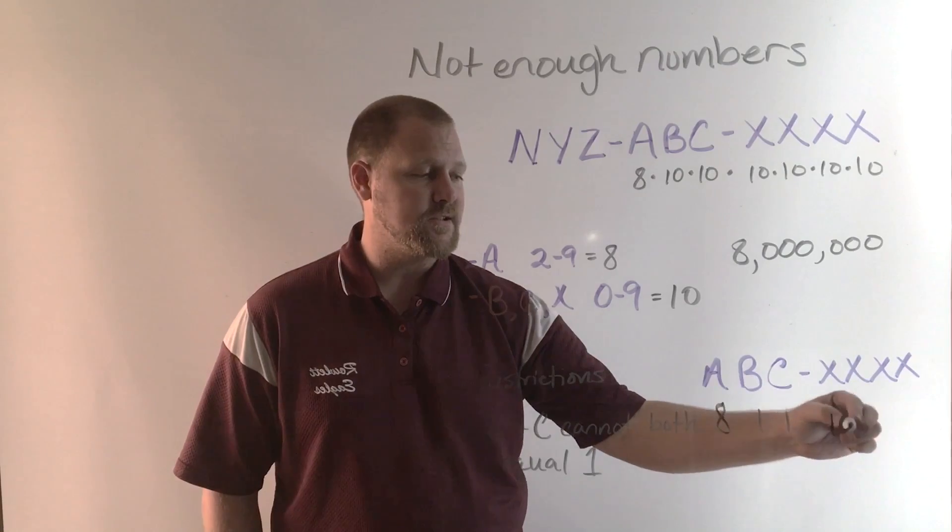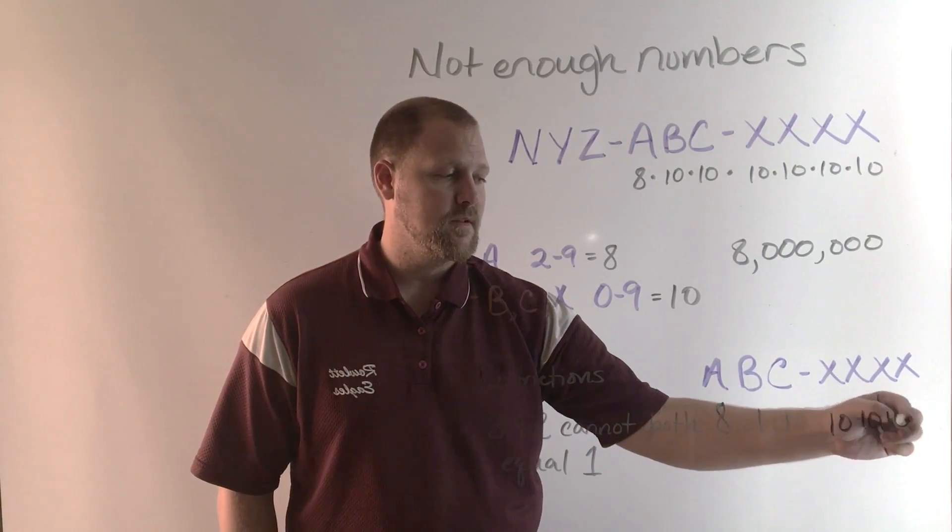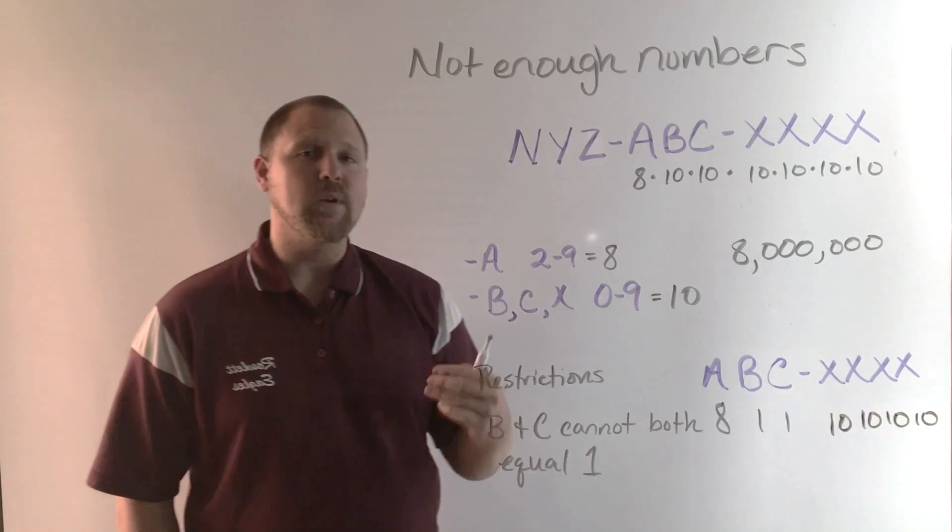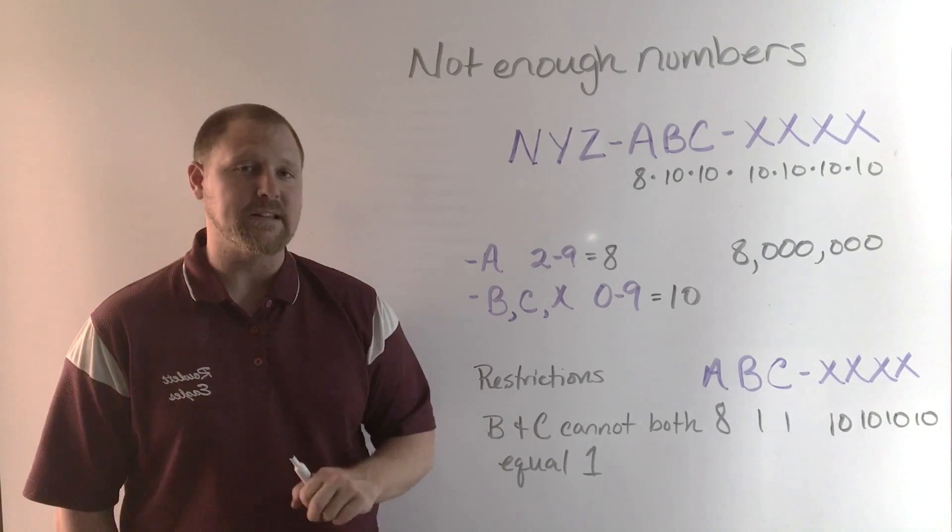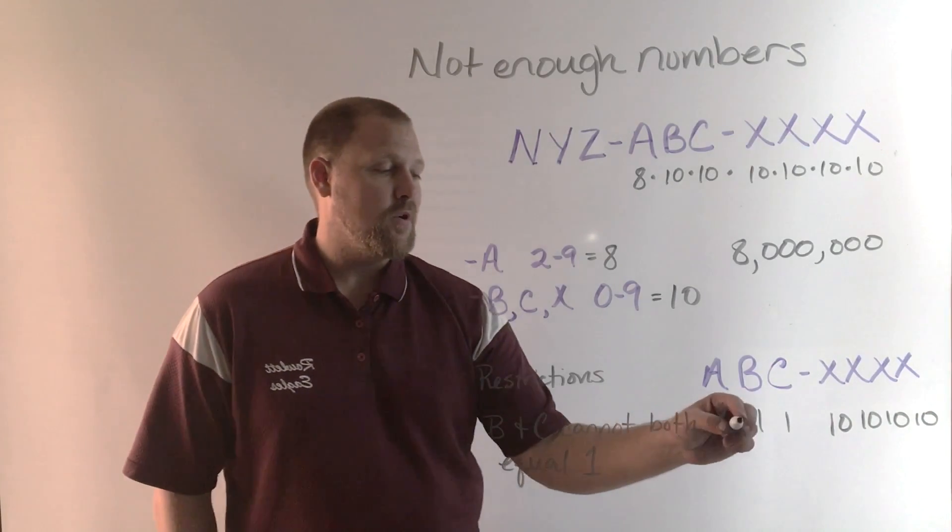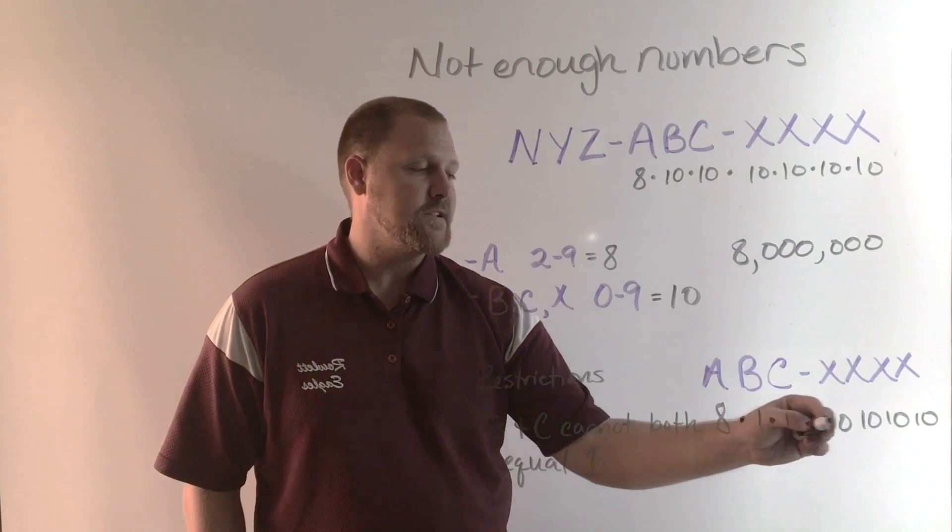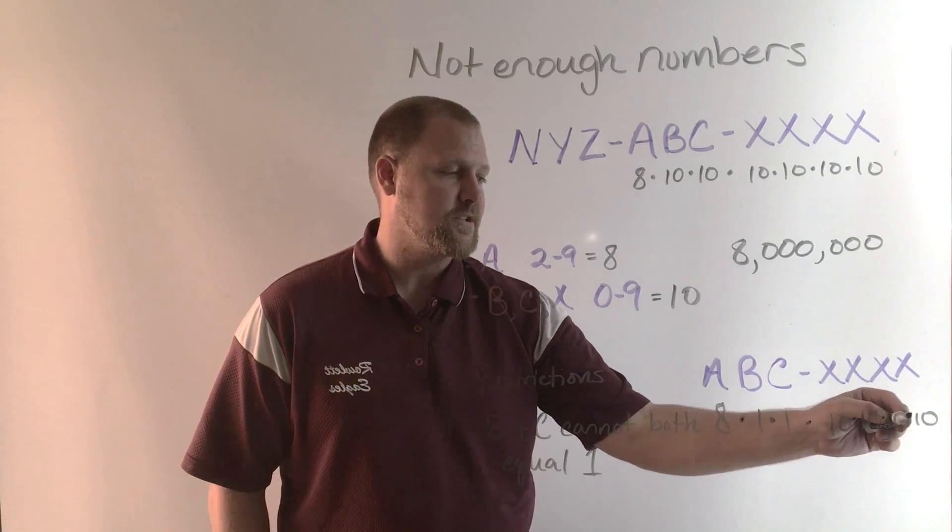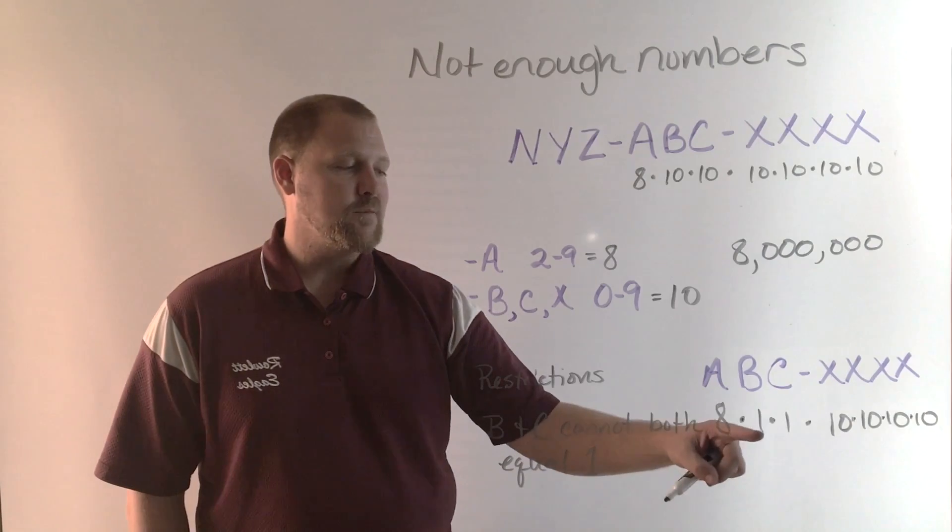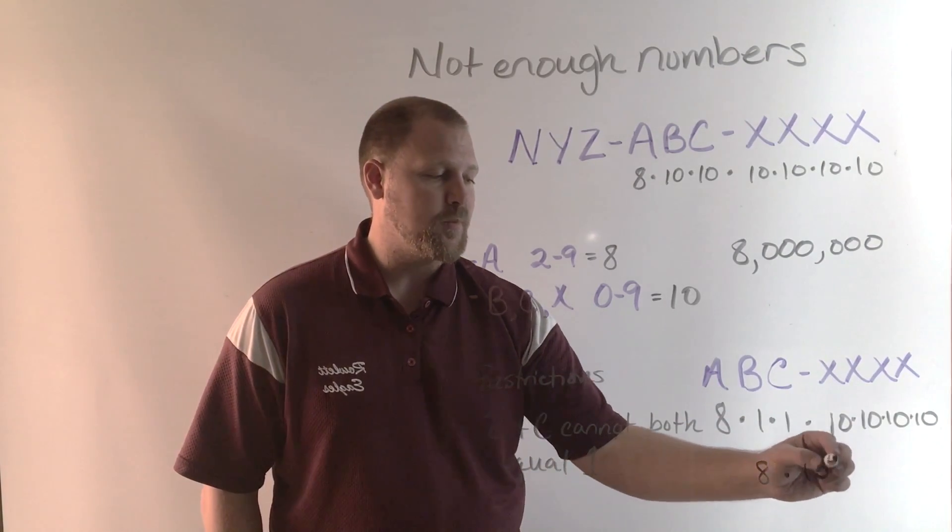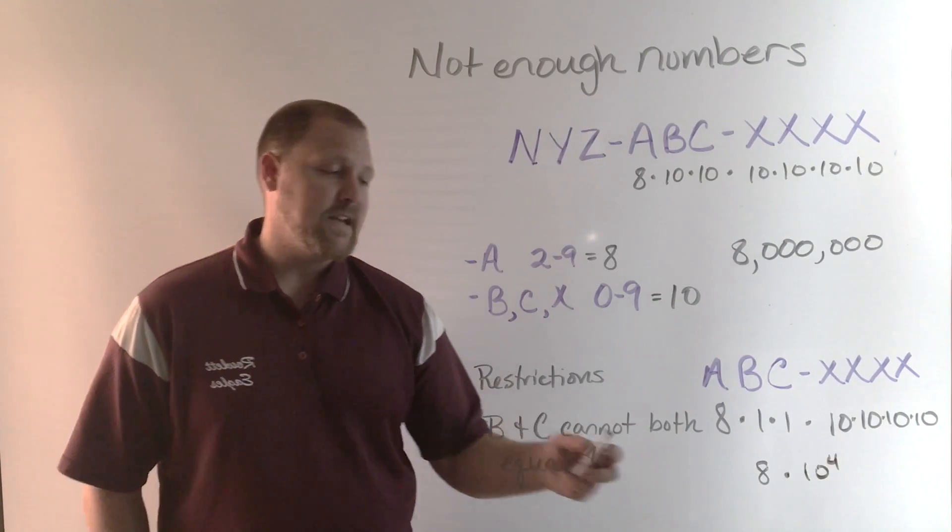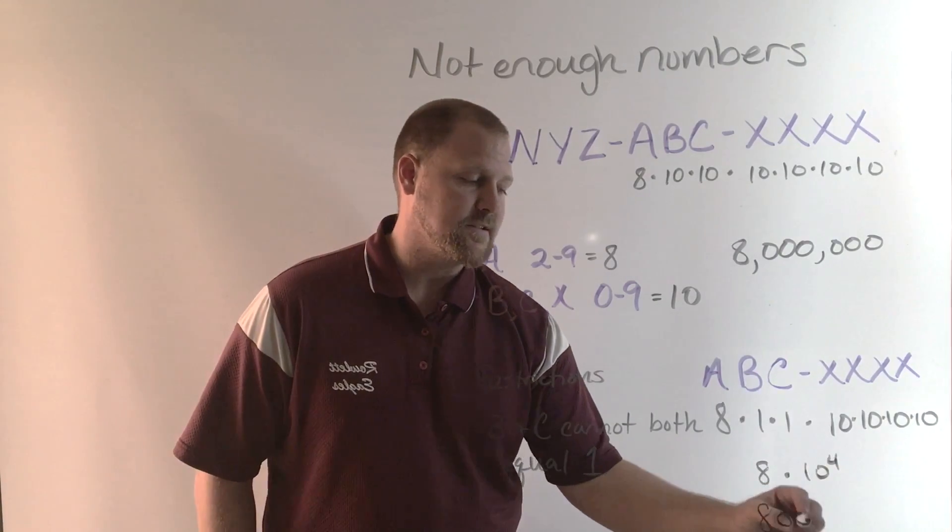All four X's can still be 10. And again, here we have the counting principle. Here I've restricted B and C to both being one at the same time. So we multiply these seven events again to get the number of restrictions. We have eight times one times one, well that's just eight times 10 to the fourth power. 10 to the fourth power is 10,000. Eight times 10,000 is 80,000.